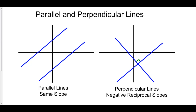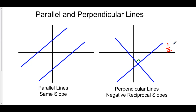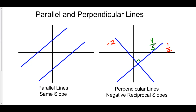So, as an example, if the slope of this line right here is one half, then the slope of the perpendicular line is the negative reciprocal of one half, which is negative two over one. If the slope of our positive line here is four over five, then the slope of our negative line right here is the negative reciprocal of four over five, which is negative five over four.